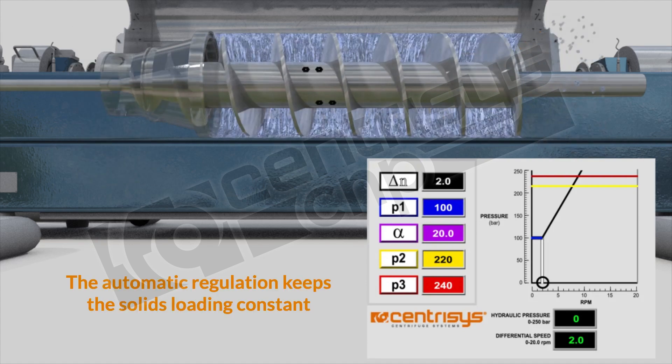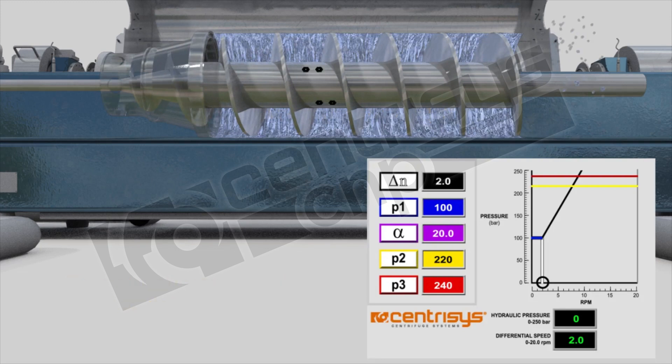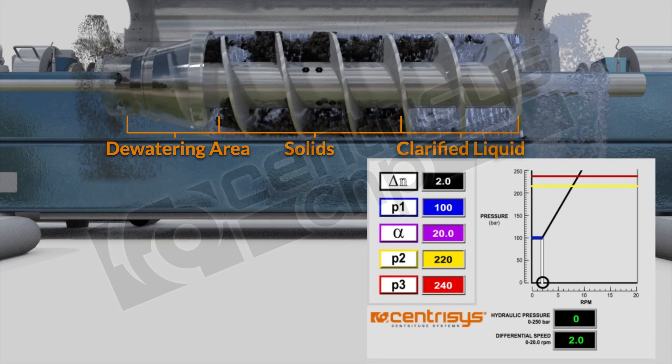The automatic regulation of the centrifuge is important to keep the solids loading of the machine constant. In order for it to function properly the solids loading has to be consistent where about two-thirds of the centrifuge are filled with solids.